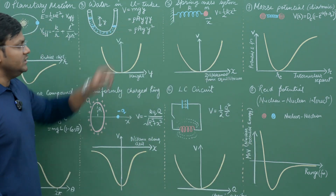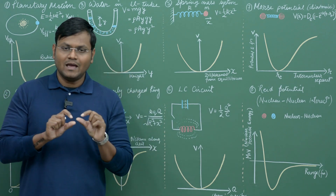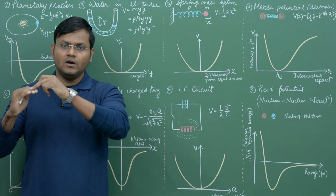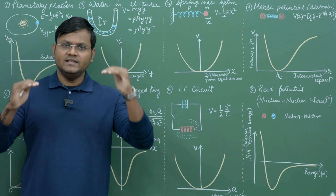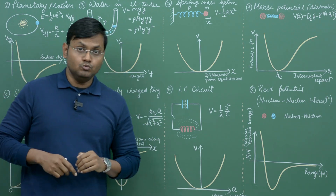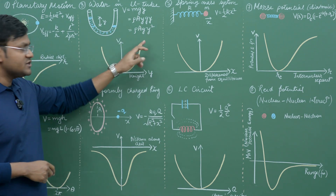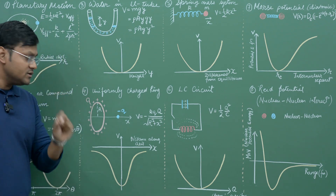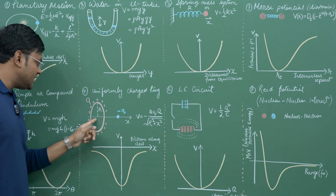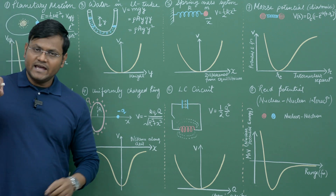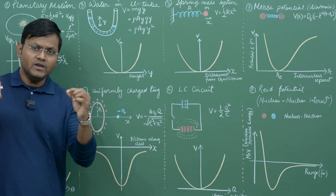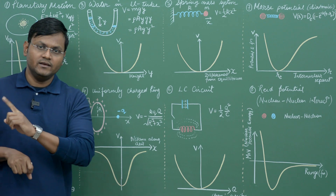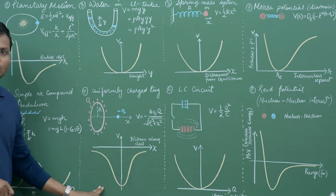Next is water in a U-tube. If you have a U-shaped capillary tube filled with water and you displace one of the water levels by some vertical position, you end up getting oscillations in the level of the water. The potential energy function is represented by a parabola. Next we have a uniformly charged ring with a negative charge along its axis. The negative charge experiences an attraction, starts moving along the axis towards the ring, goes beyond the equilibrium point, and starts oscillating. The electrostatic potential energy has this expression and graphically looks something like this.